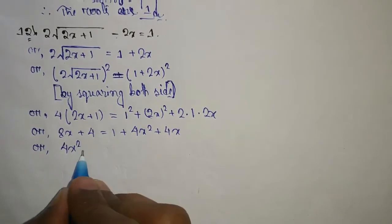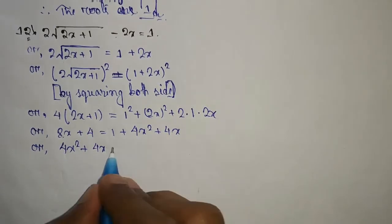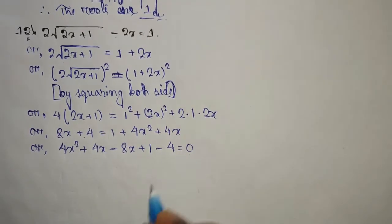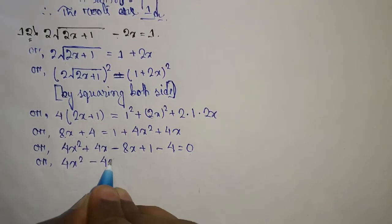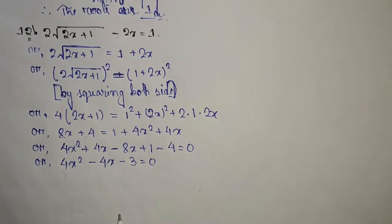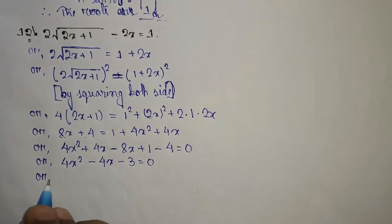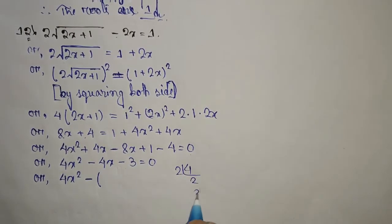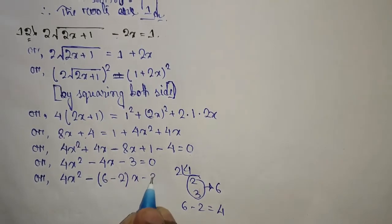Rearranging: 4x² + 4x + 8x on one side, minus 8x, plus 1 plus 4 minus 4, equals 0. This simplifies to 4x² minus 4x minus 3 equal to 0. Now we split the middle term: 4 and 3, giving factors 6 and minus 2, so 4x² minus 6x minus 2x minus 3.